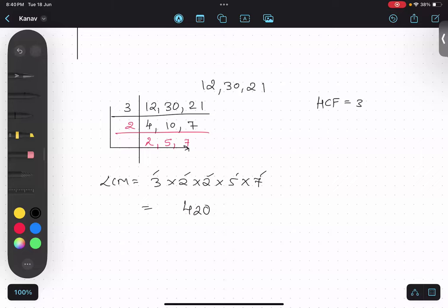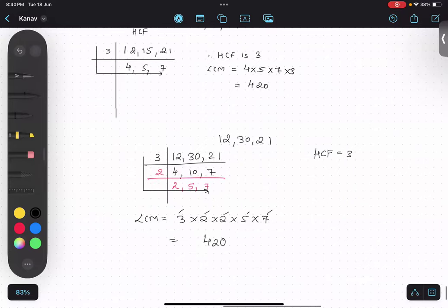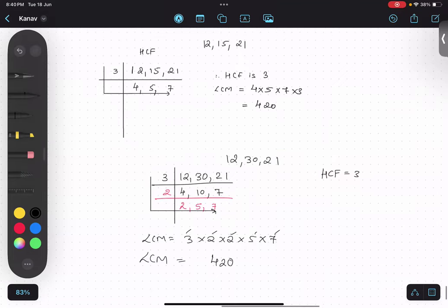Again, 420 is the LCM coincidentally. Okay? Okay. These are the two different types of questions which I discussed just now for three numbers. Quickly copy this thing. We'll do one more question.